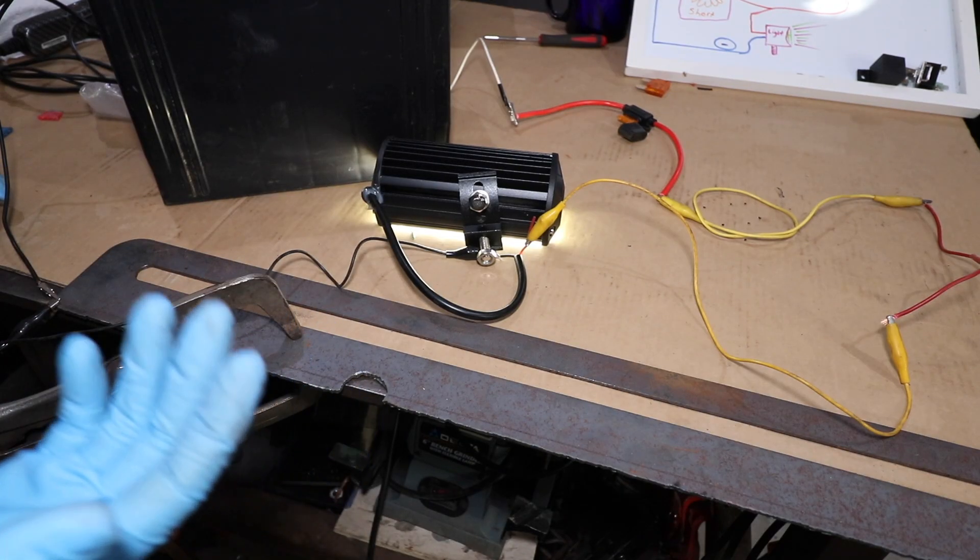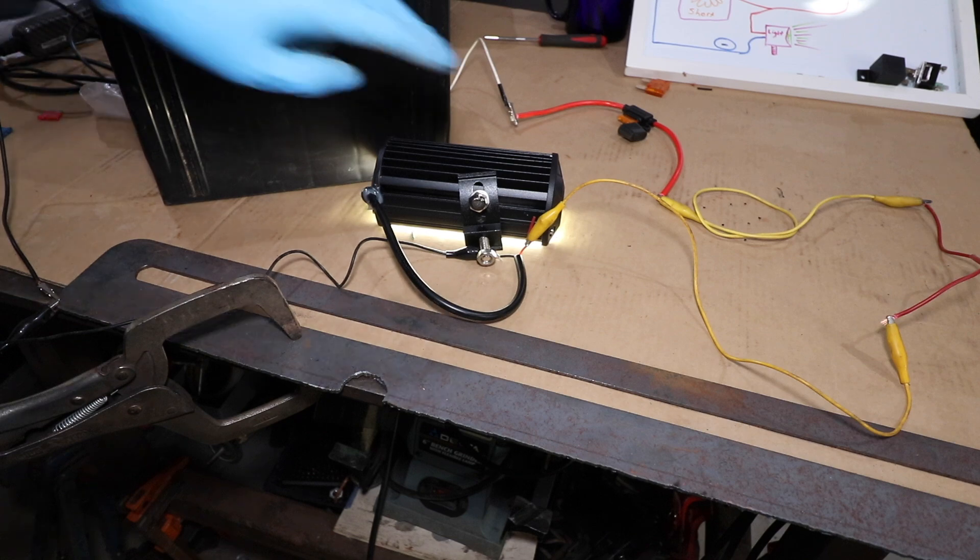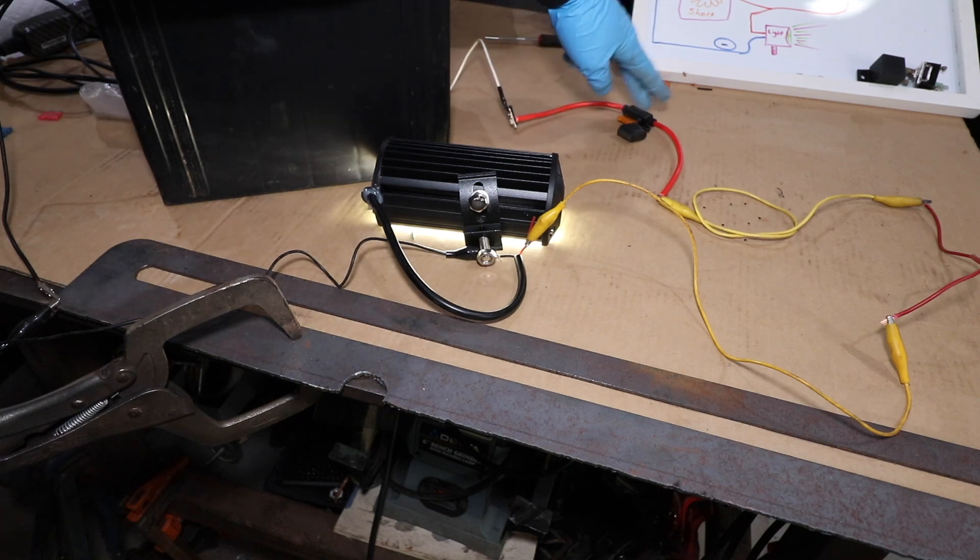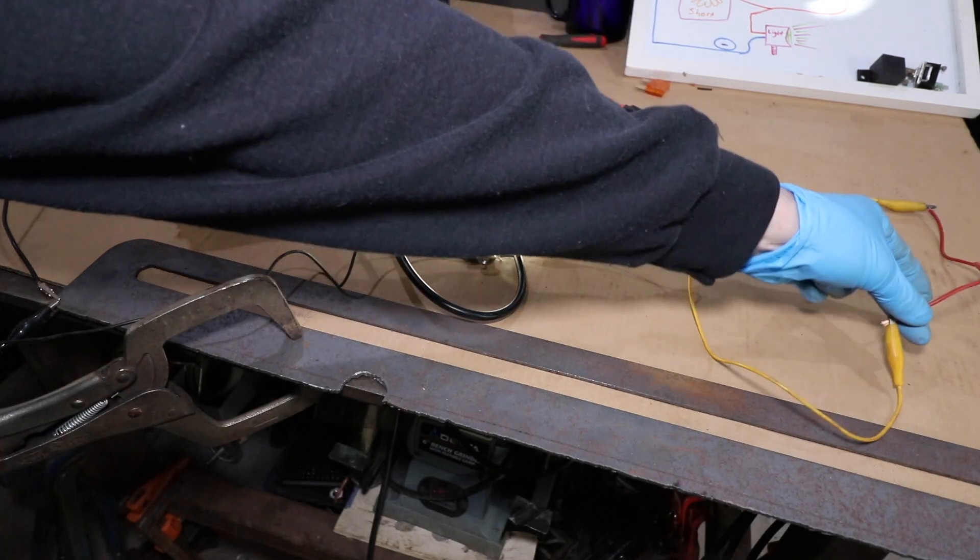Now I'm going to simulate a short circuit. Basically we have our supply coming off the battery fuse, 5 amp fuse. This is the wire that we're going to short out, this red wire here.